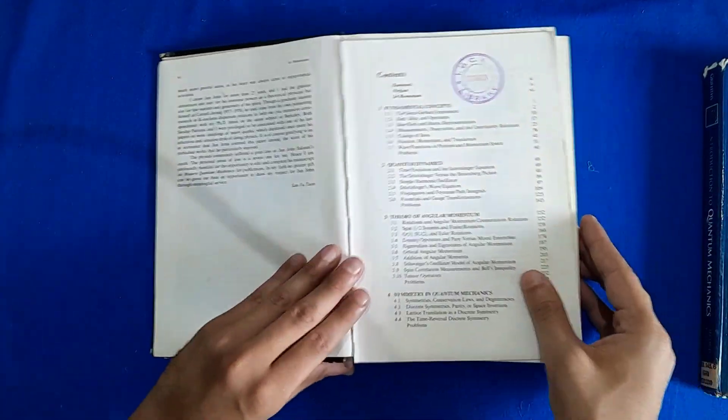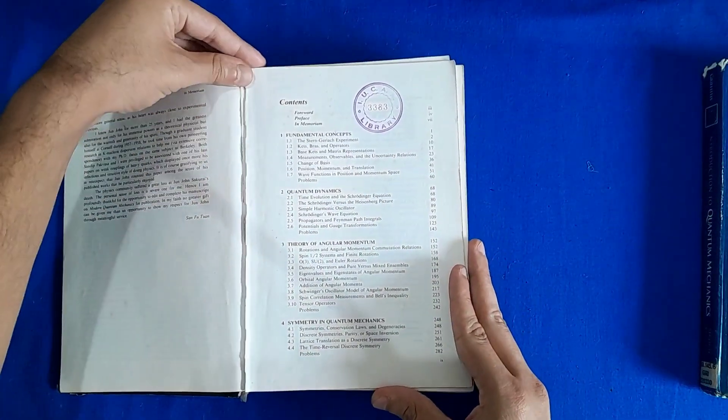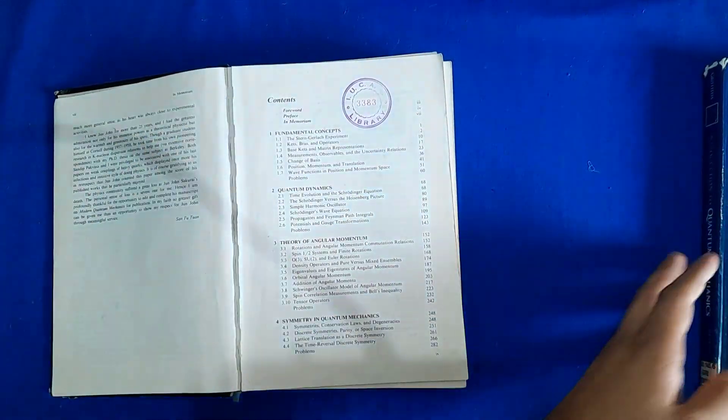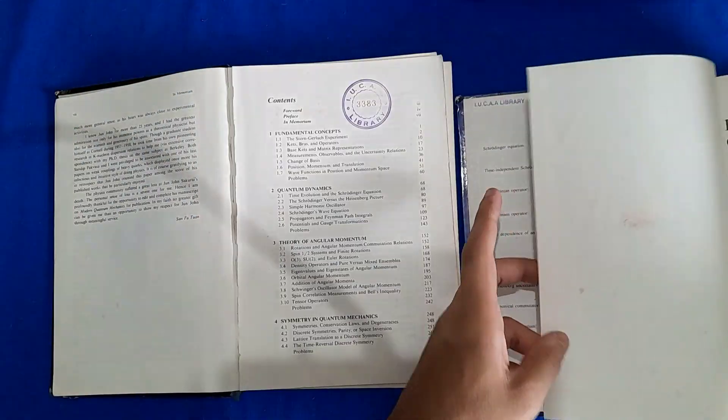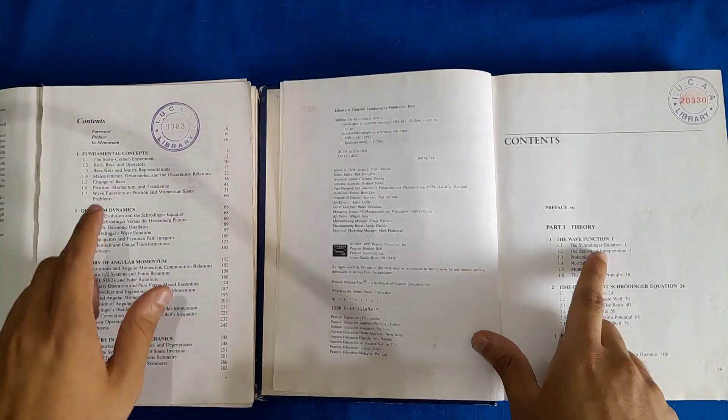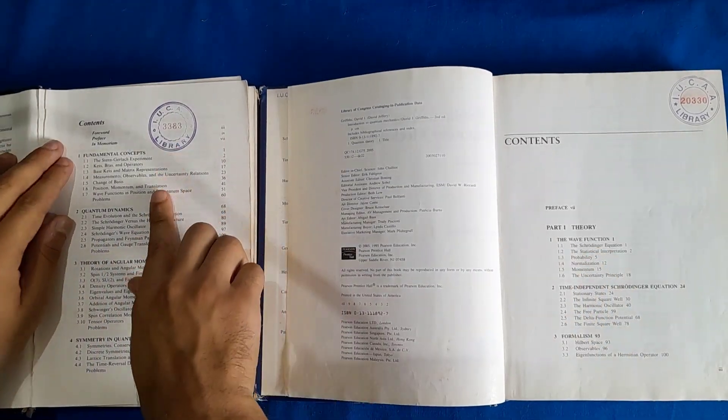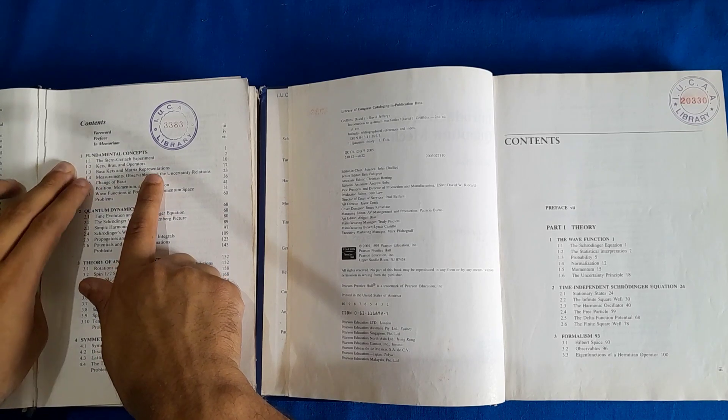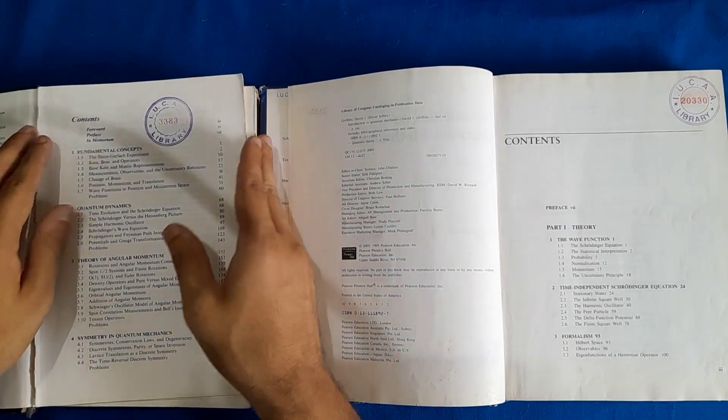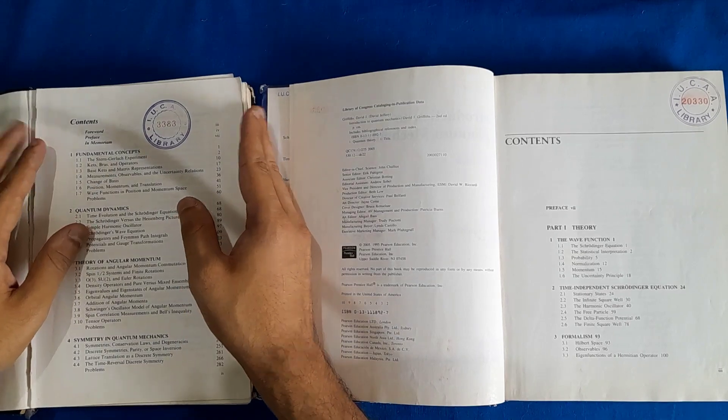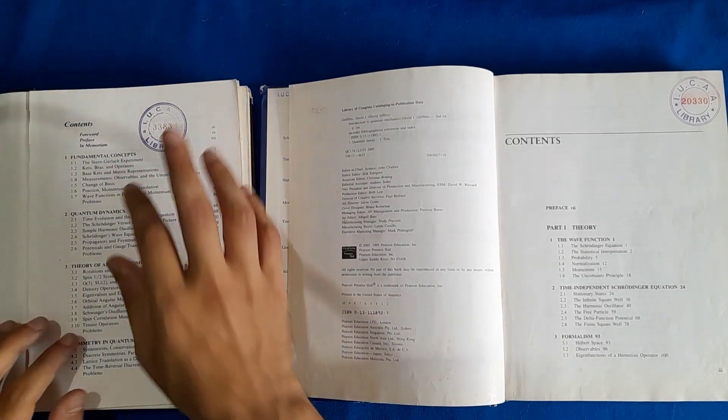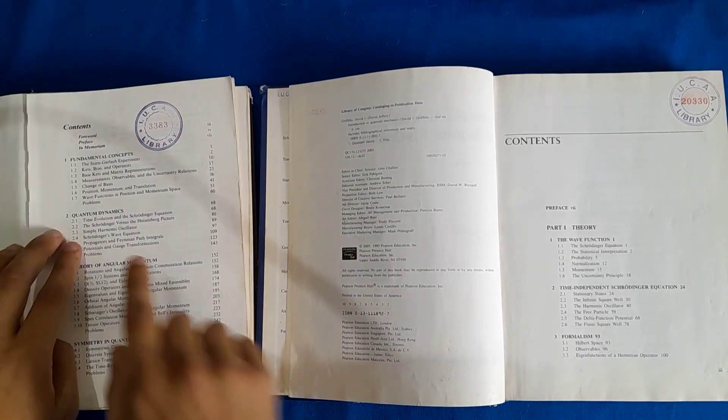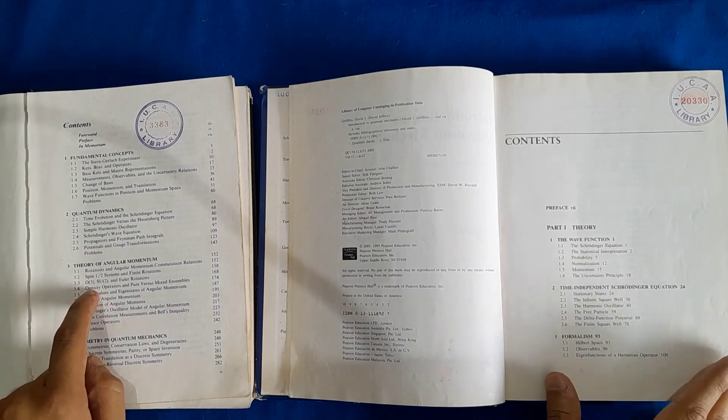As you can see the book is slightly in bad shape, but these are the contents. It is more or less the same list of contents you see. So first there are some fundamental concepts, you see they start with the bracket notation representation. They hardly go to actual wave function and that is one of the beautiful things about this book. You have quantum dynamics which is the wave function and theory of angular momentum.